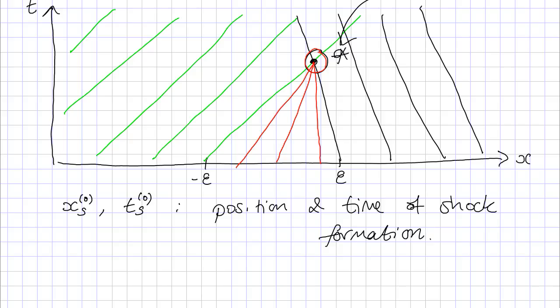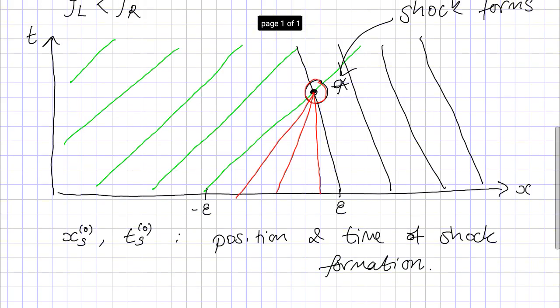And we'd like to calculate these. And the key to doing so, if we go back to our diagram here, is to note that the two characteristics, the form of which we know that meet at the shock formation at this one here, so at the edge of the green region, so this characteristic and that characteristic meets this one here. So we know the equations of these two characteristics, they're straight lines. So if we equate them, we can work out the position and time of the shock formation.